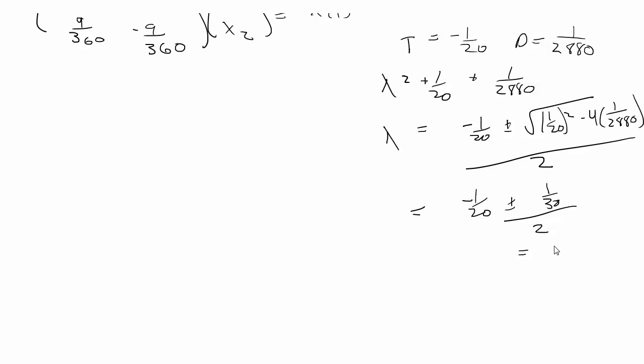So that simplifies to negative 1 over 20 plus or minus 1 over 30 over 2. So the two values are going to be negative 1 over 24 and 1 over 20. So now we have lambda 1 is equal to negative 1 over 24 and lambda 2.